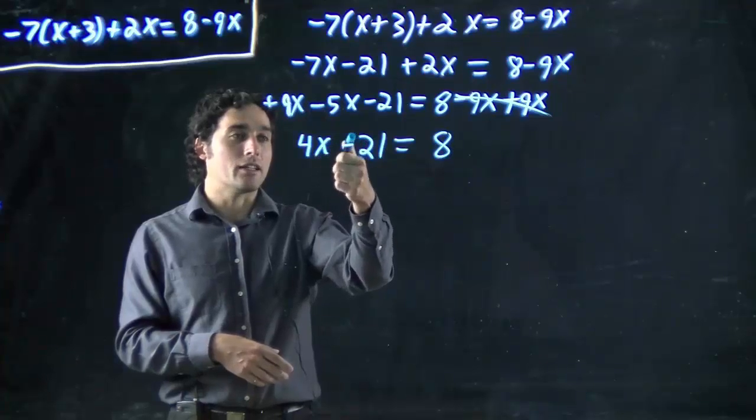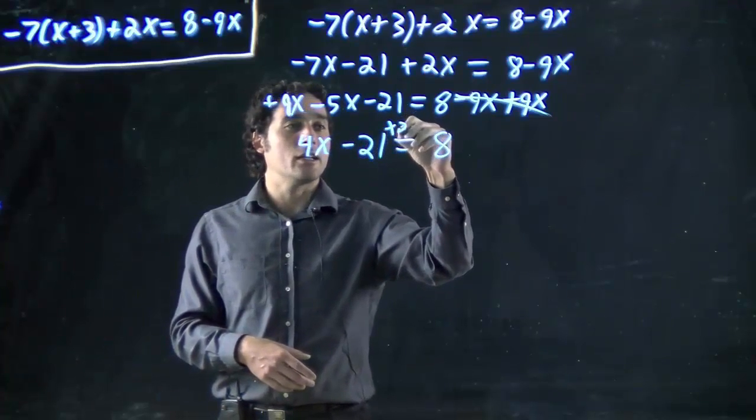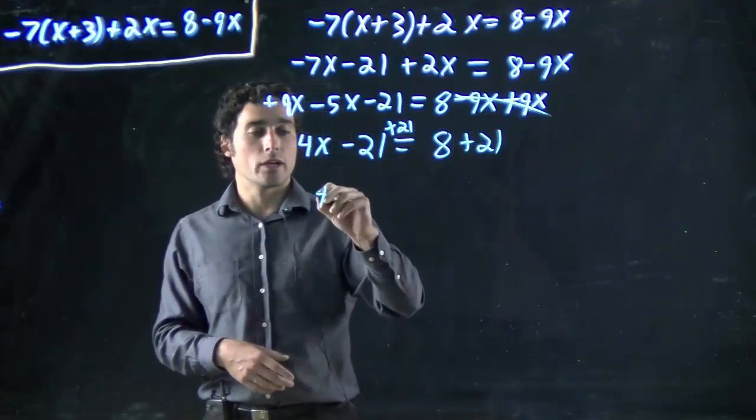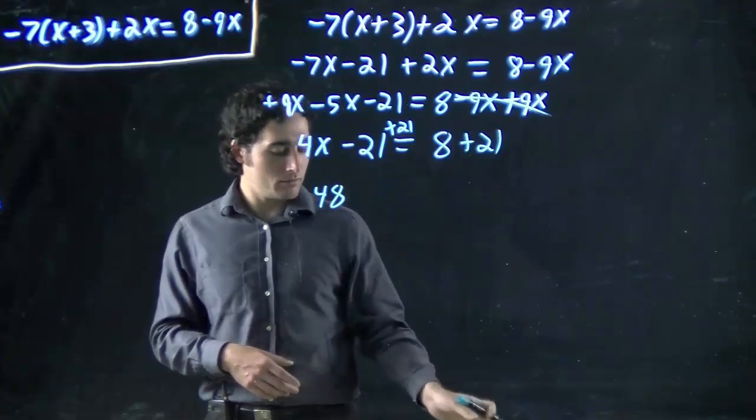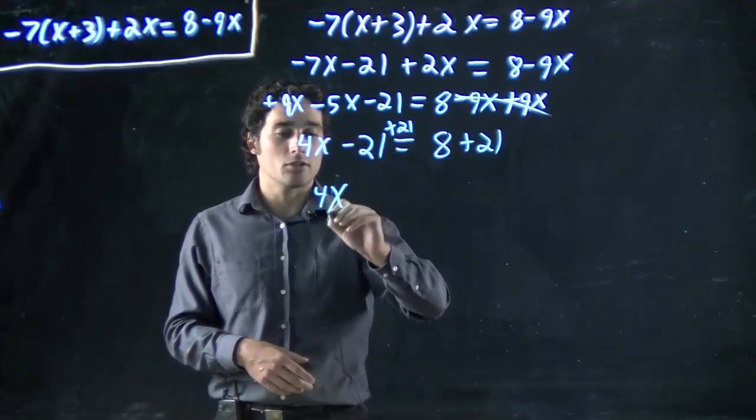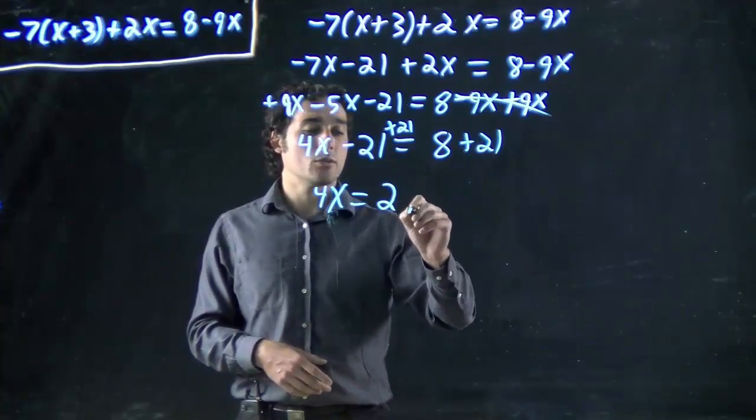Now I've got to bring the number to that side. As always, do the opposite, so I'm adding 21 to both sides. So, 4x, still on, my apologies, hopefully that still looks good. And we've got 8 plus 21, which is 29.